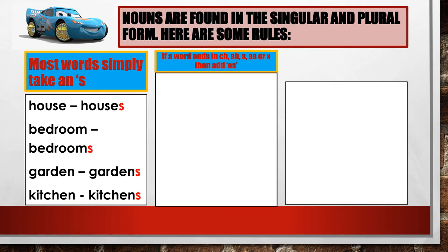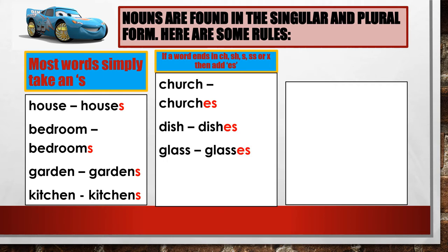If a word ends in CH, SH, S, SS, or X, then add ES for the many. Example: one church, many churches. One dish, many dishes. One glass, many glasses. One box, many boxes. One circus, many circuses.